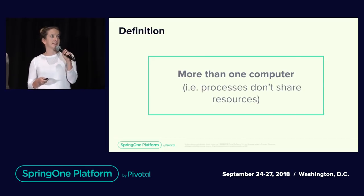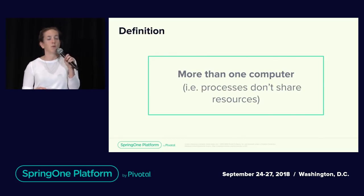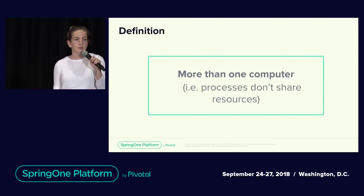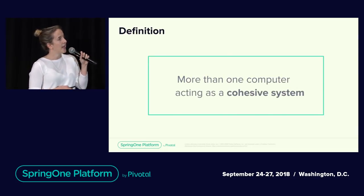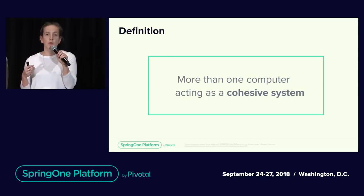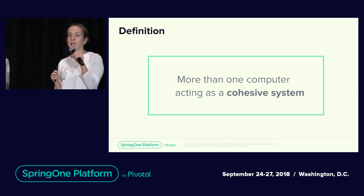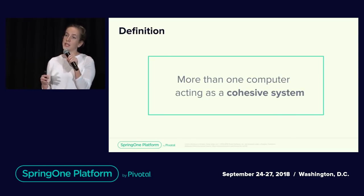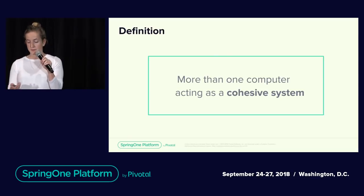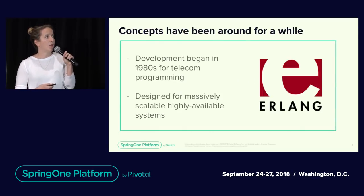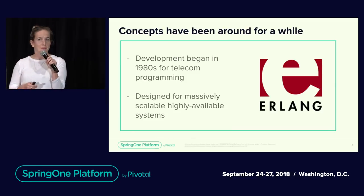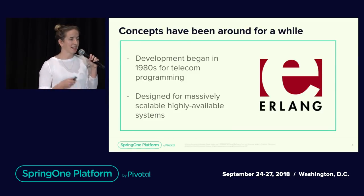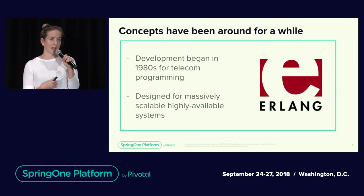We're defining distributed system here as more than one computer, by which we mean that the processes don't share resources, and that those more than one computers are acting as a cohesive system and providing a cohesive output for a user. And while distributed systems have become incredibly hot recently, these concepts have actually been around for quite a while, especially the ones we're talking about today.